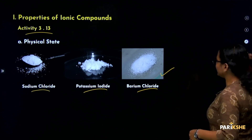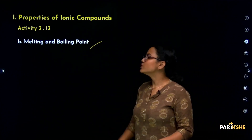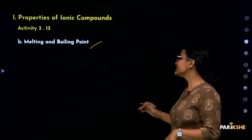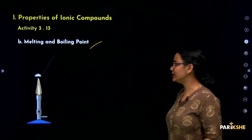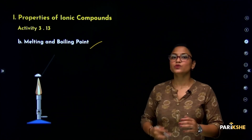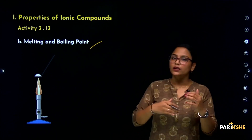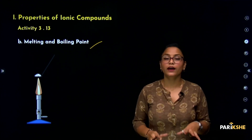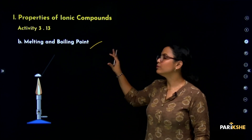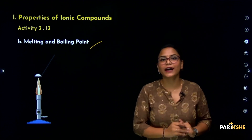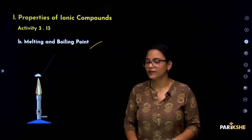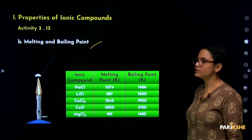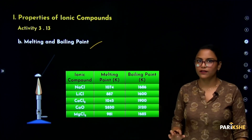Next property is melting and boiling point. To observe the melting and boiling point, you take the samples on a spatula and apply heat. When you heat them, you will observe that these compounds do not melt or boil easily. From this you can conclude that the melting and boiling points of ionic compounds are pretty high.